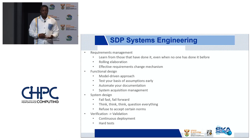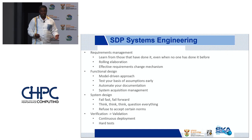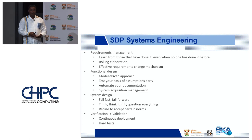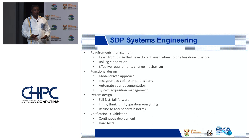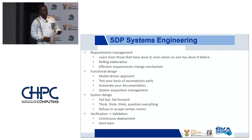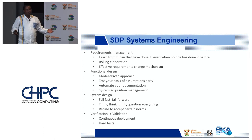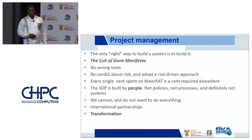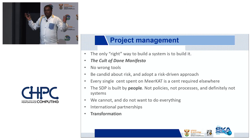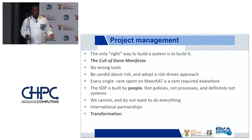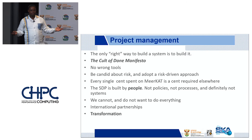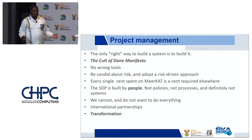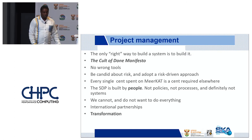Verification and validation: we took a continuous deployment approach. We didn't have time for deployment breaks or test breaks. Hard tests — the SDP stubbornly refused to sign off on any quality document until we could point into the sky and see what we were receiving. It was the only way to make sure people didn't say things like 'we passed by simulation.' For project management: the only right way to build a system is to have it built. Get on with the business of building it, continue, learn, and move fast.